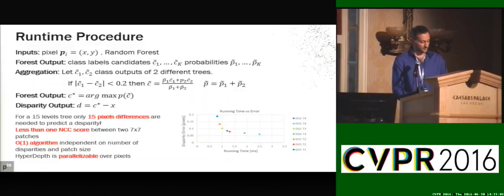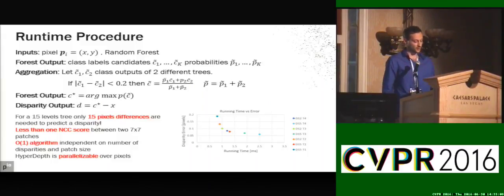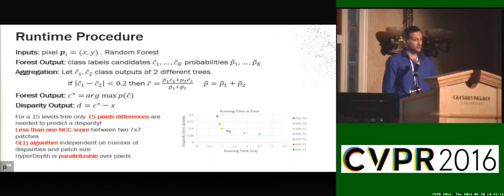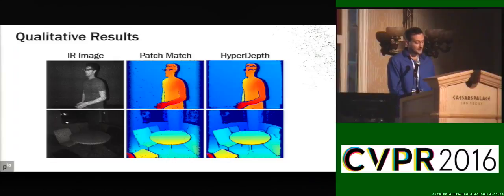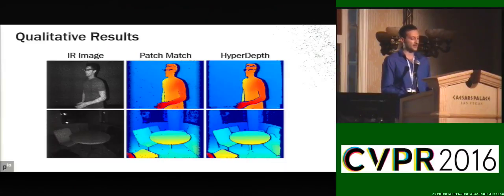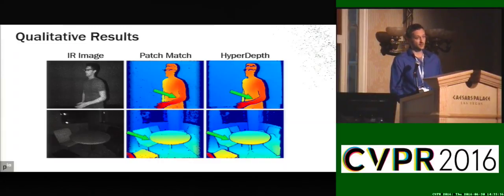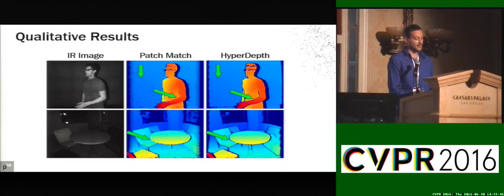Running times on 1.3-megapixel images using a Titan X: with a configuration of three trees with 12 levels, we run at 1 millisecond — that is 1000 frames per second — with a disparity error of just 0.1 pixels. Looking at results, we compare HyperDepth with PatchMatch, which serves as our ground truth. These are all test-set images the algorithm has never seen. Our algorithm produces better edges without any edge-fattening effect, and also produces more complete depth maps.